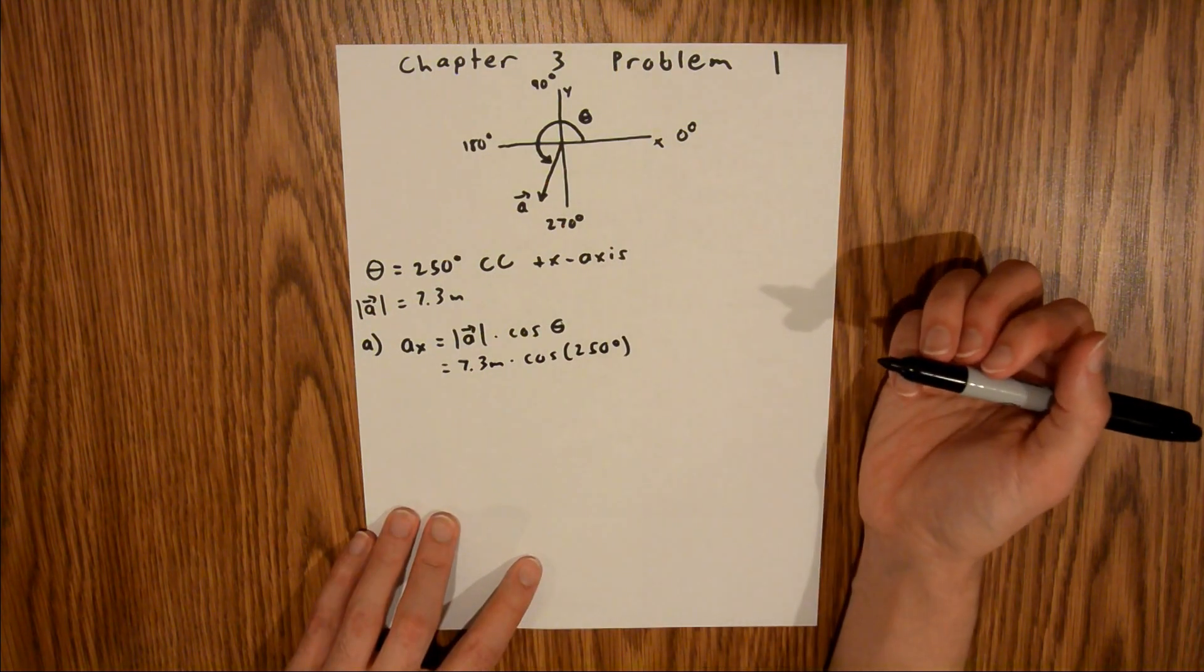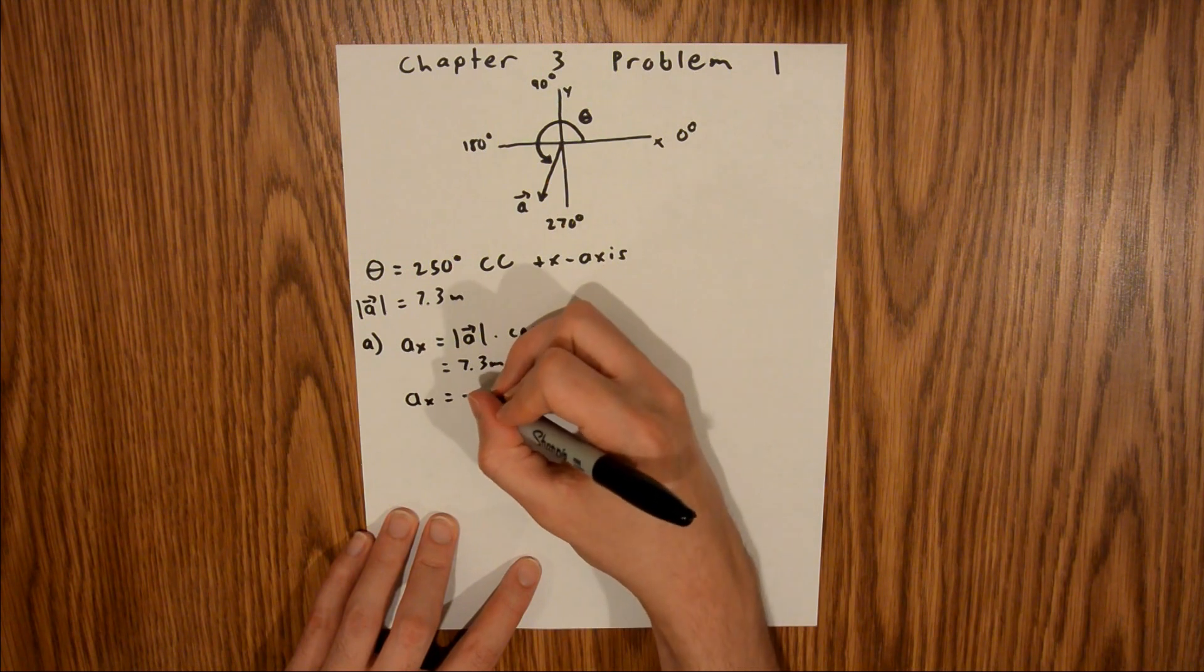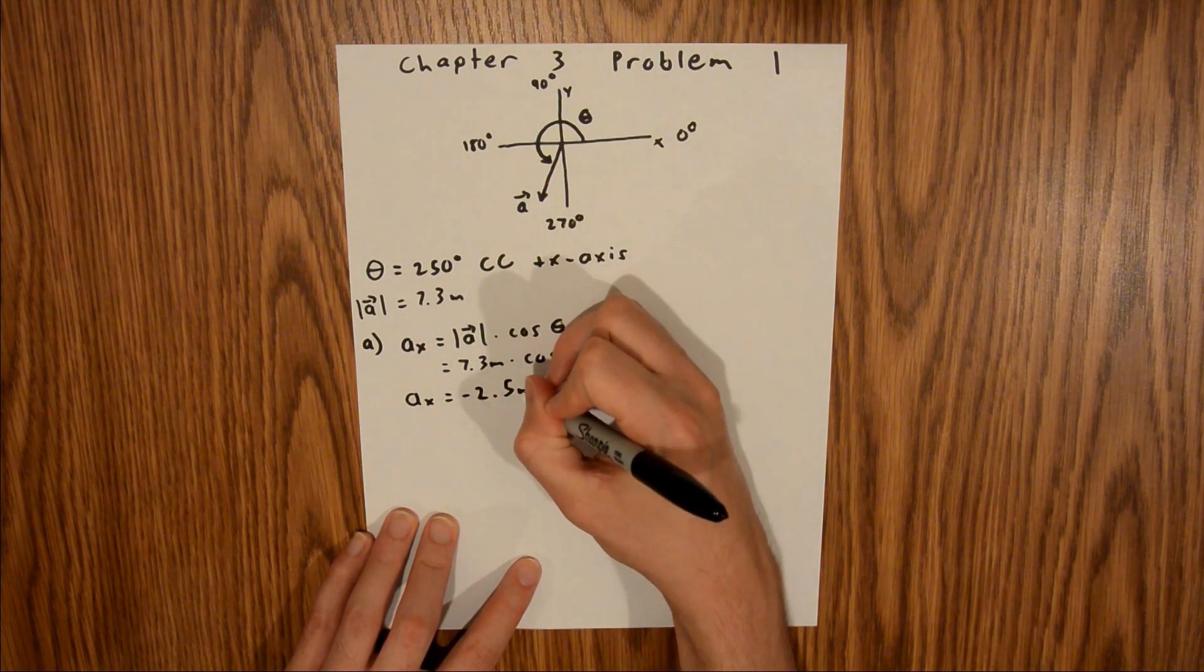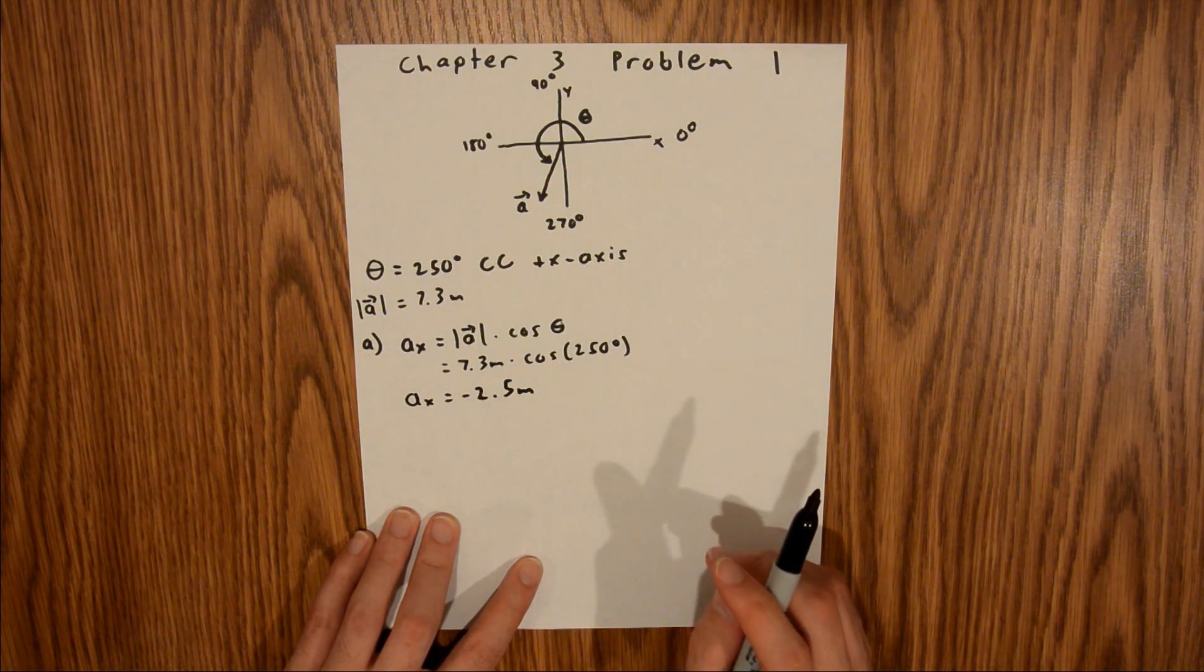And if you plug that into your calculator, you will find that the x component of the vector is equal to negative 2.5 meters. Just make sure when you plug this in, your calculator is in degree mode and not radian mode.